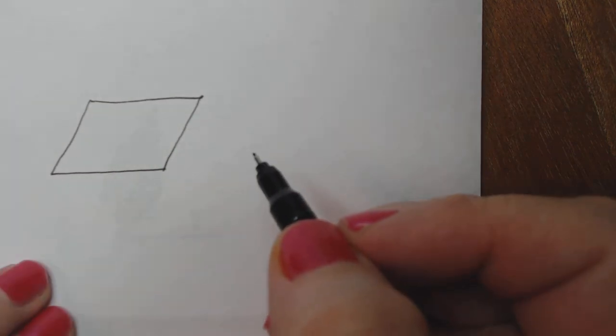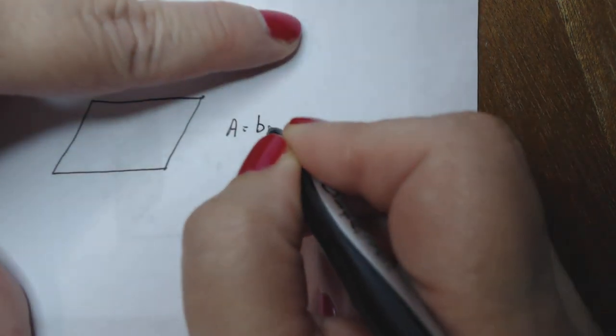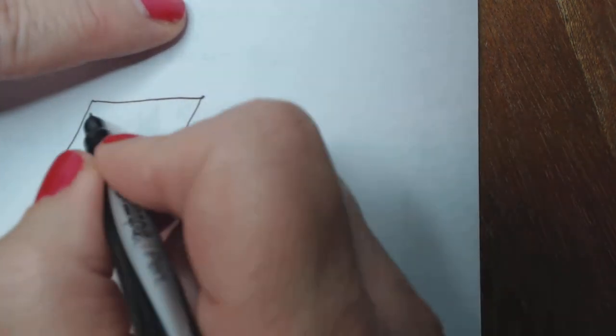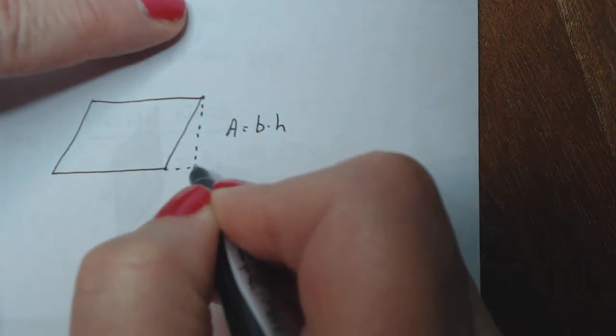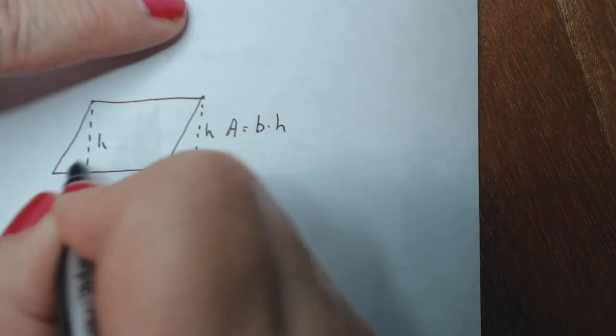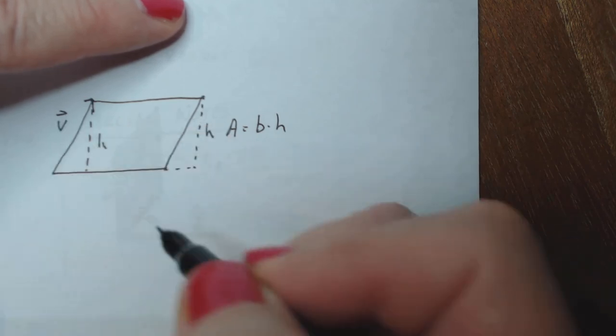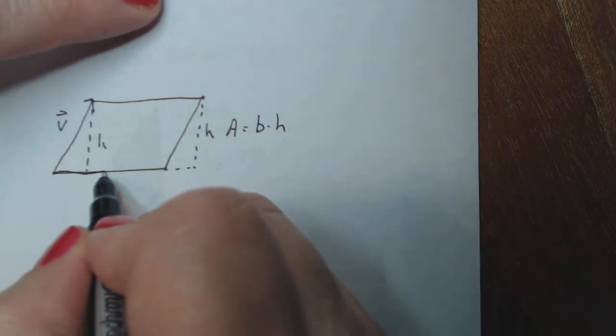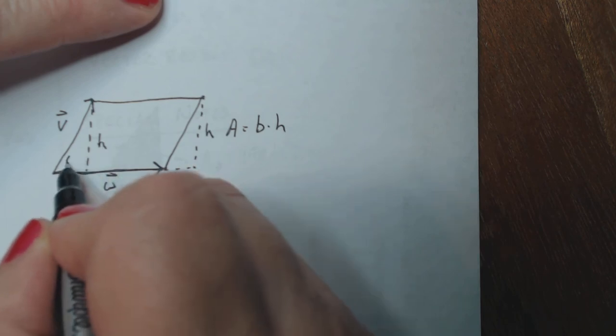There we go. There's a parallelogram. The area of a parallelogram is base times height. So the height of this parallelogram, we usually just go from the top straight to the bottom. So there's the height, but I can also put it right here. Now, if I put my vectors on there, that'd be my vector V. And then my vector W would be right here. And then the angle theta is right there.